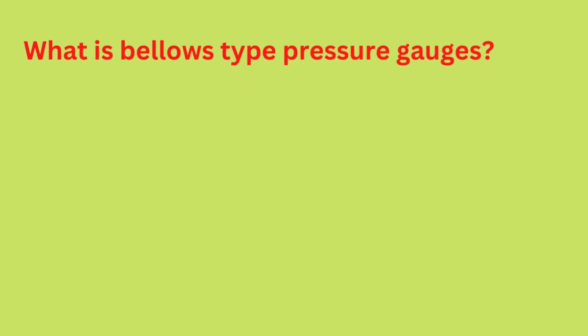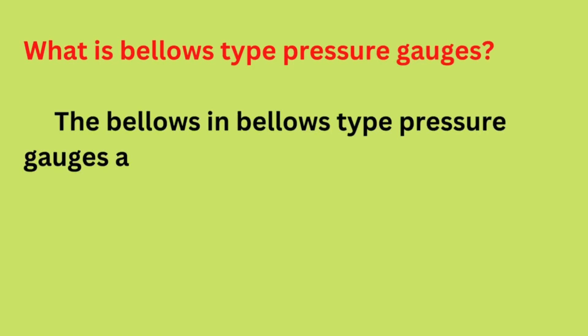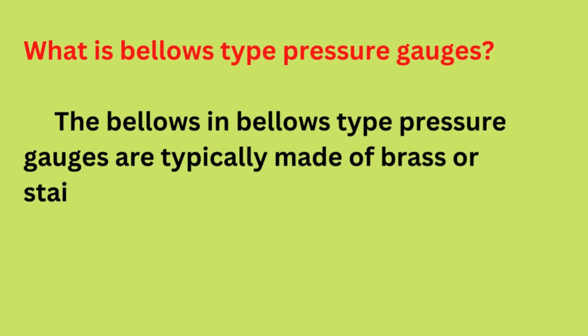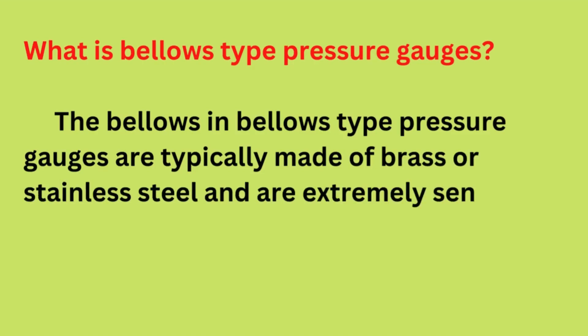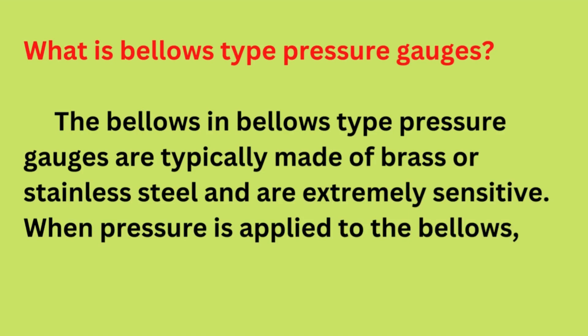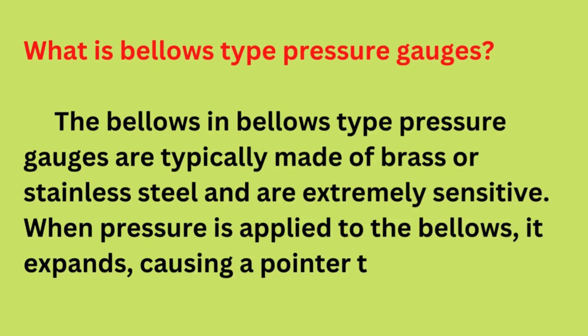What is a bellows-type pressure gauge? The bellows in bellows-type pressure gauges are typically made of brass or stainless steel and are extremely sensitive. When pressure is applied to the bellows, it expands, causing a pointer to move.